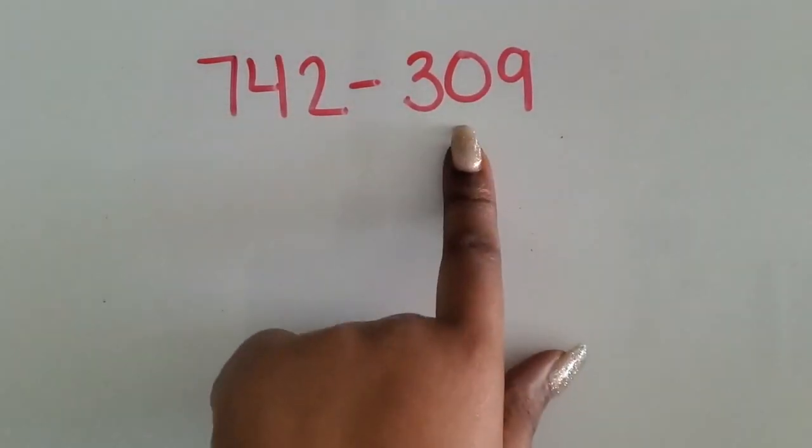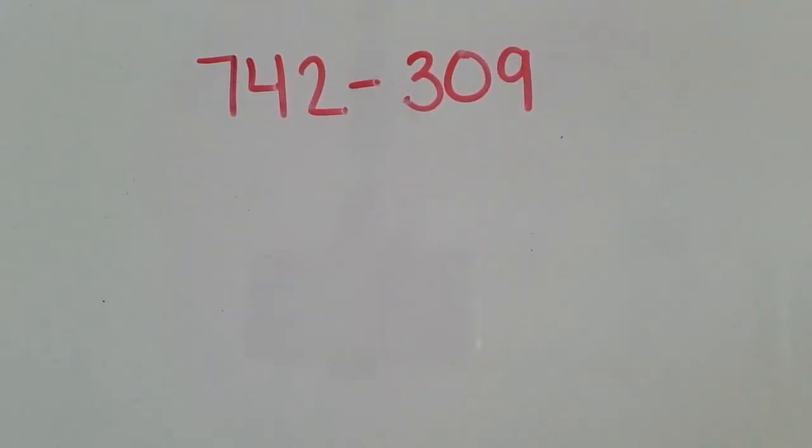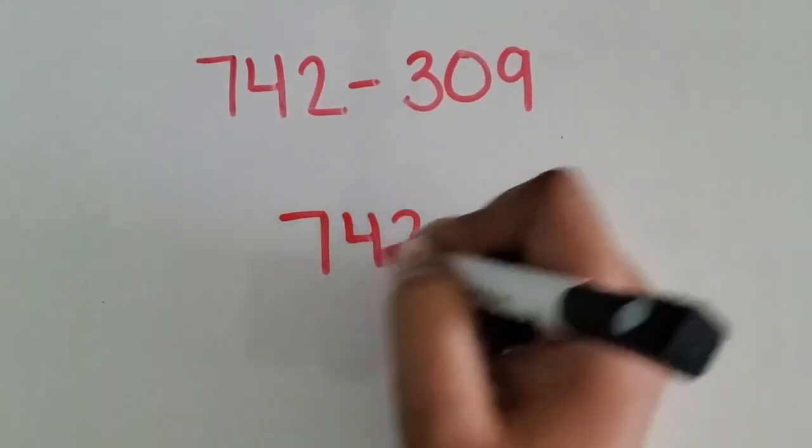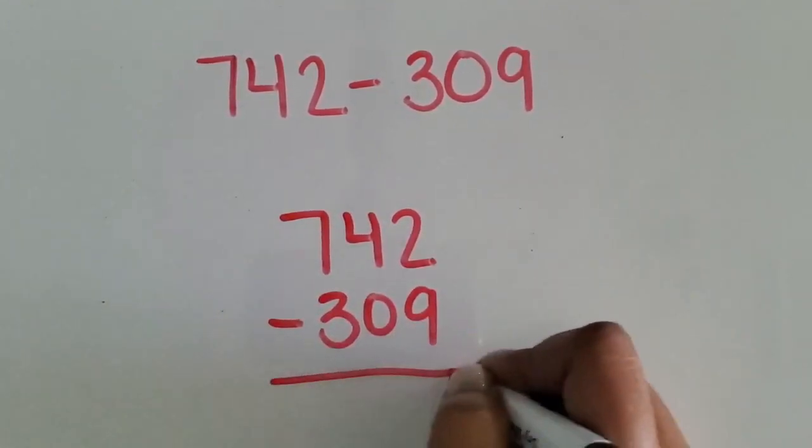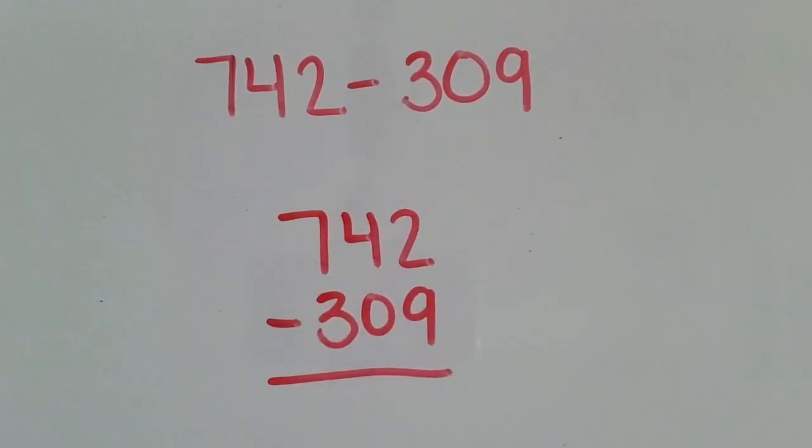We are going to subtract one three-digit number from another three-digit number using the standard or traditional algorithm. We are going to start by lining up our numbers vertically based on place value, our ones places together, our tens place, and our hundreds place.